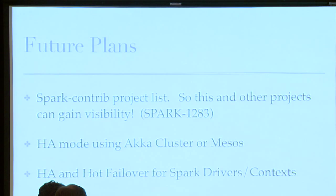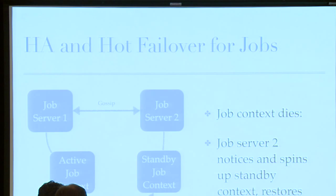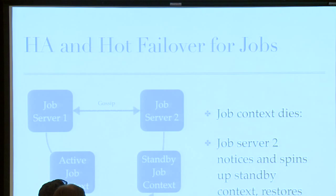Finally, some future plans — I'll quickly focus on one of them, though there's a lot we can do with this project. One idea we'd like to pursue is HA and hot failover for jobs. As many people know, the Spark context is a single point of failure in the Spark stack. With something like a job server, you can use the checkpointing mechanism in the Spark context to save state to persistent storage like HDFS. The job server can then coordinate and have a backup context on standby, and be able to read that checkpoint and fail over to it if one context dies.